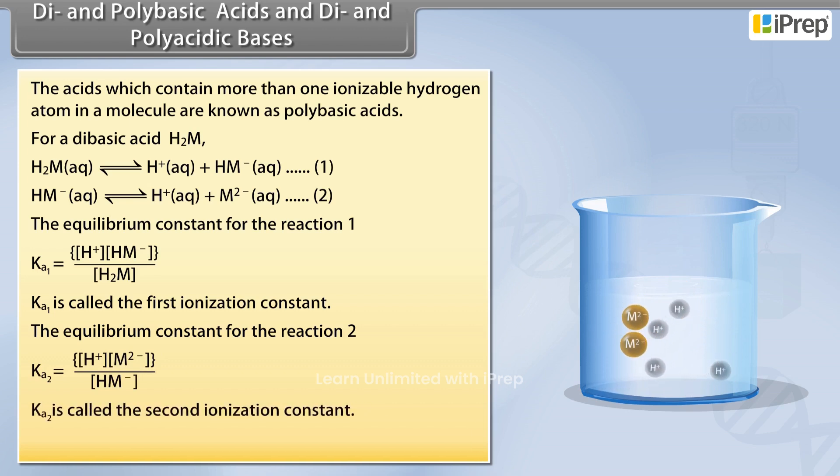Ka2 is called the second ionization constant. Ka1 is greater than Ka2 because of more electrostatic force.